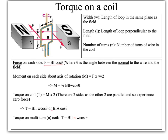This can also be written as BIAcosθ where A is the area of the coil. That's just if there's one turn. Now if there's multiple turns of wire, this torque gets multiplied by the number of turns because the force would be multiplied by the number of turns. So the torque on a multi-turn coil is BILNWcosθ.